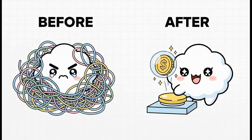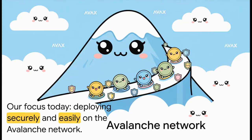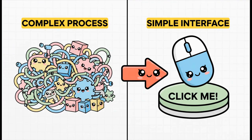Well, now you can. Meet TokenTree. It's a no-code generator that makes creating your own token super simple. And today, we're focusing on how you can deploy securely and easily right on the Avalanche Network. So how does it turn something so complex into just a few clicks? Let's dive in.